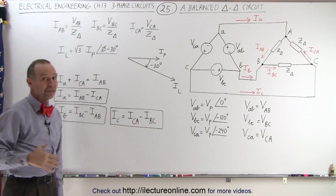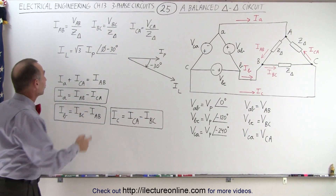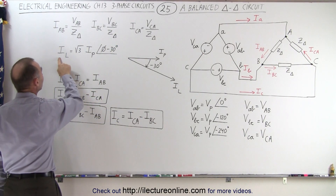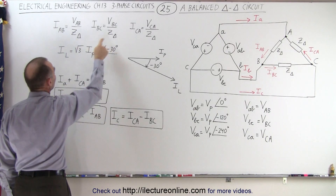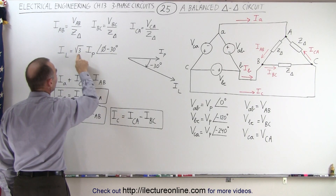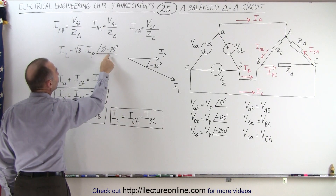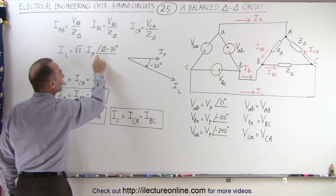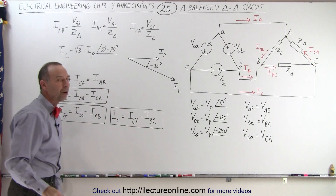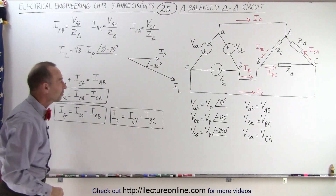To find the line current, all we have to do is multiply the magnitude of the phase currents by the square root of three and subtract an angle of 30 degrees from whatever the phase angle is of those three phase currents.